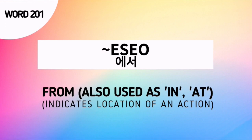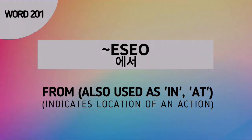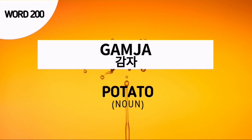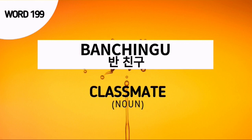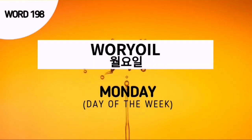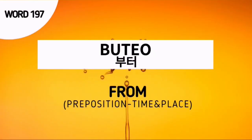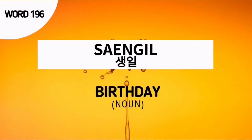Esso is not an independent word and must be added to a place name. Word number 200 is Gamja — the Korean noun for potato. Word number 199 is Banjinggu, meaning 'half friend' or classmate. Word number 198 is Wo yo il, which means Monday. Word number 197 is Putto, which means 'from.' Word number 196 is Sangil — the Korean noun for birthday. Word number 195 is Takcho, which means 'shut up.'